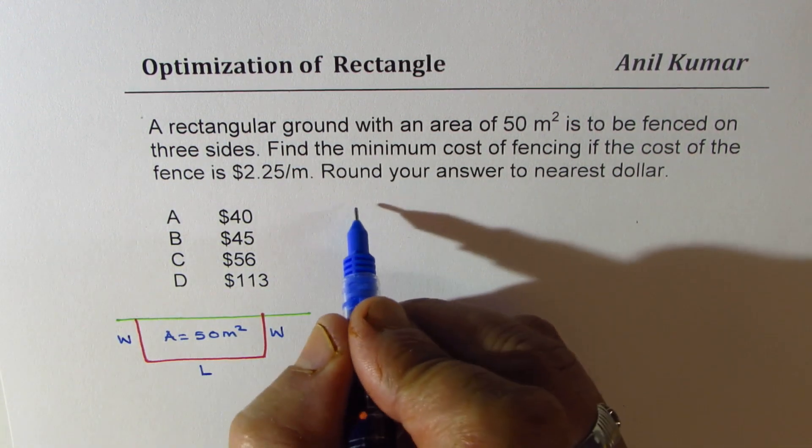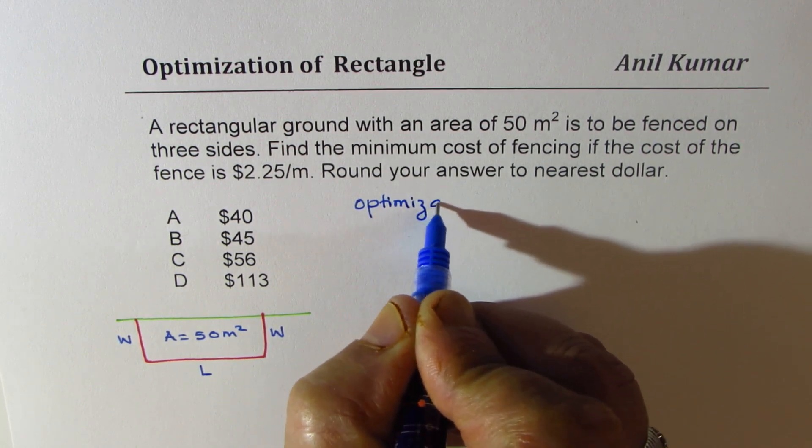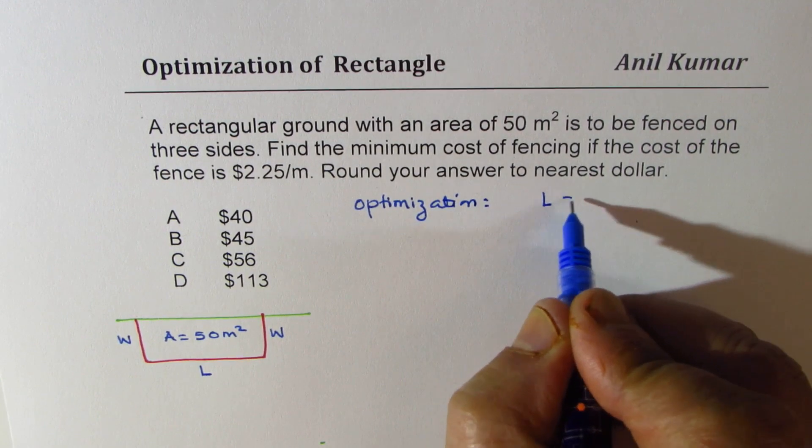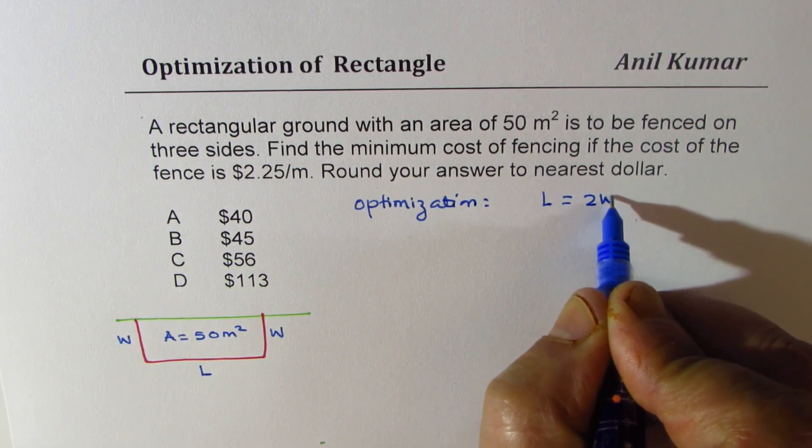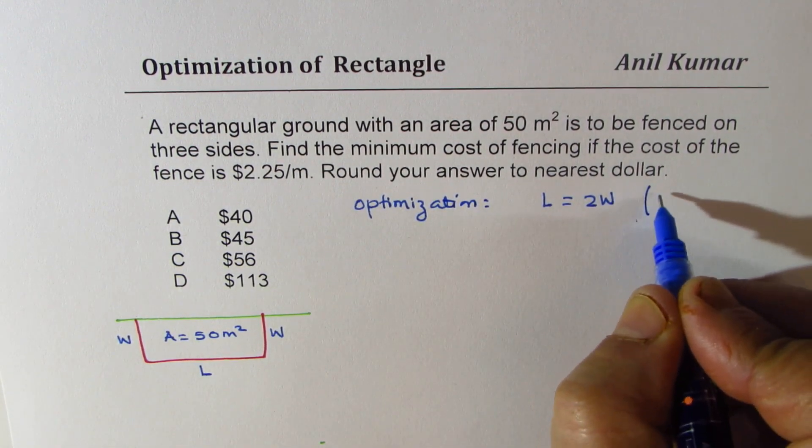So for optimization, we know length should be equal to two times width when we are using three sides of a rectangle.